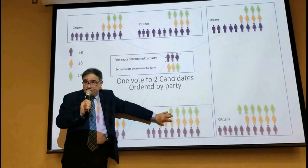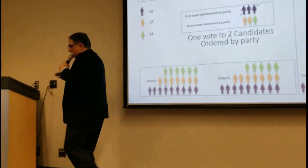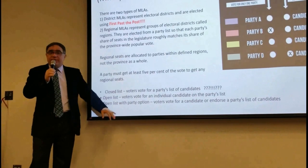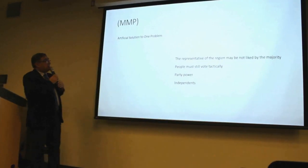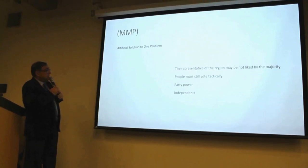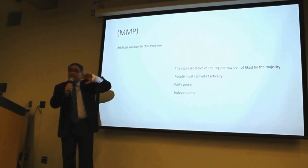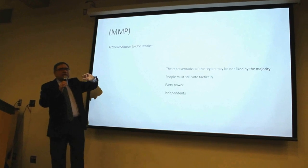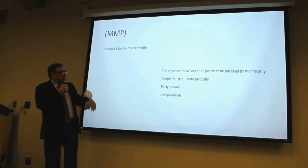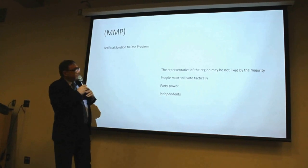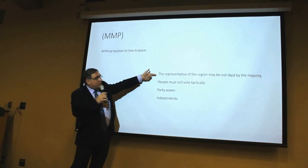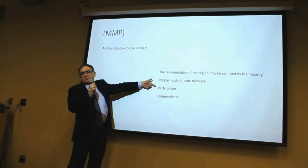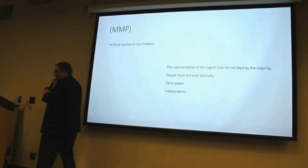These additional people come from one of three types of party lists — it's not yet clear which form it will take. The problem that remains with multi-member proportionality under MMP is that it's an artificial solution: people first go to parliament through first-past-the-post, and then we try to adjust a non-proportional outcome through the party list. The representative may not be liked by the majority; people must still vote tactically; party power influences the list; and independents are weakened.